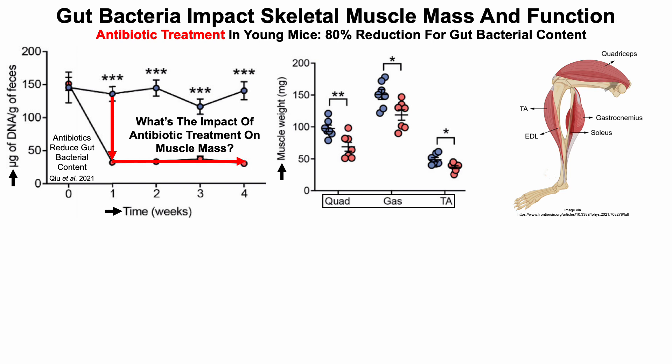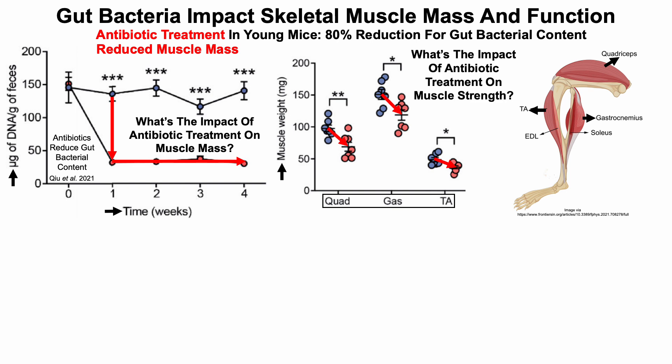These are lower leg muscles. The quadriceps is located on the upper thigh, the gastrocnemius behind the shin, and the tibialis anterior in the front of the shin. For each of these three muscles, we can see that their weight is reduced in antibiotic-treated mice when compared with non-treated mice. So antibiotic treatment in young mice reduces muscle mass.